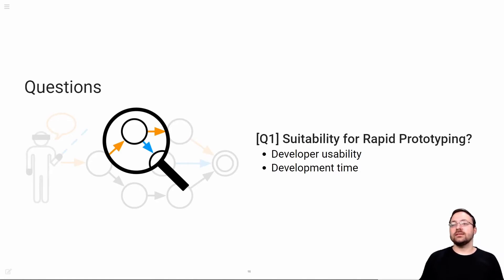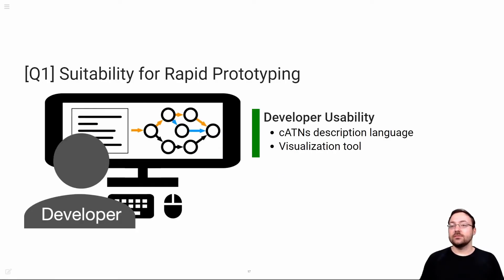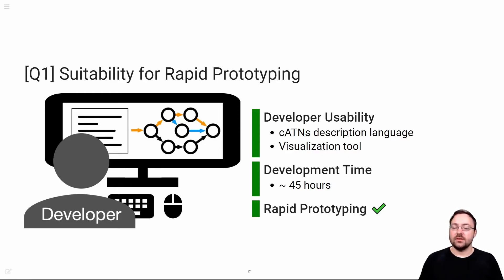Based on these three use cases, we analyzed our toolchain in terms of its suitability for rapid interface prototyping, especially in terms of developer usability and development time. Our declarative approach was well received by developers. The description language is suitable to design multimodal interfaces for XR, and the graph visualization helped developers to debug their interfaces. We estimate that non-experts can implement multimodal speech and gesture interfaces for VR in about 45 hours when using our toolchain for the first time, which is consistent with iterative interface design processes. Therefore, we conclude that our toolchain is suitable for rapid prototyping.